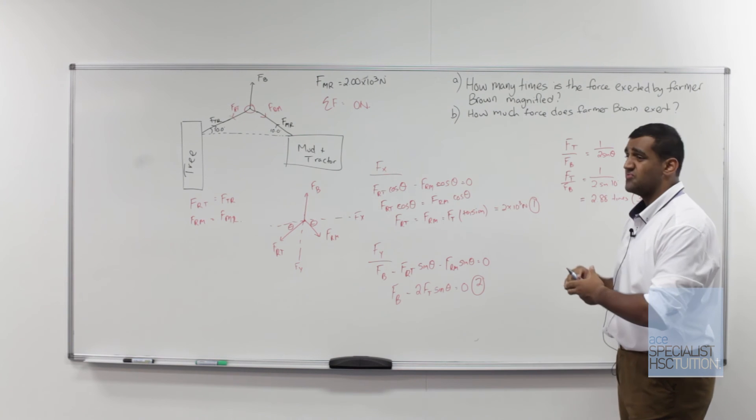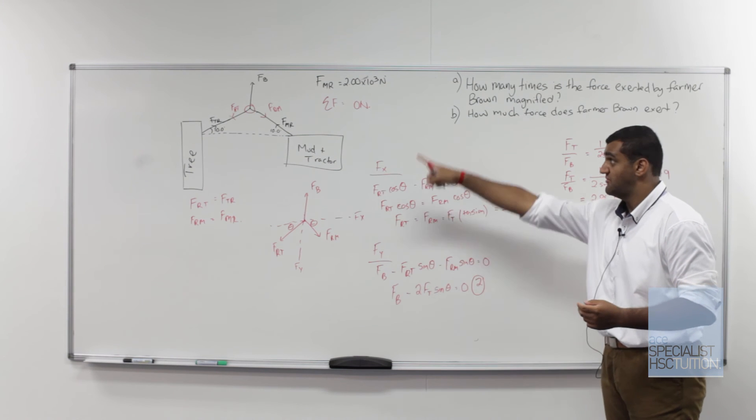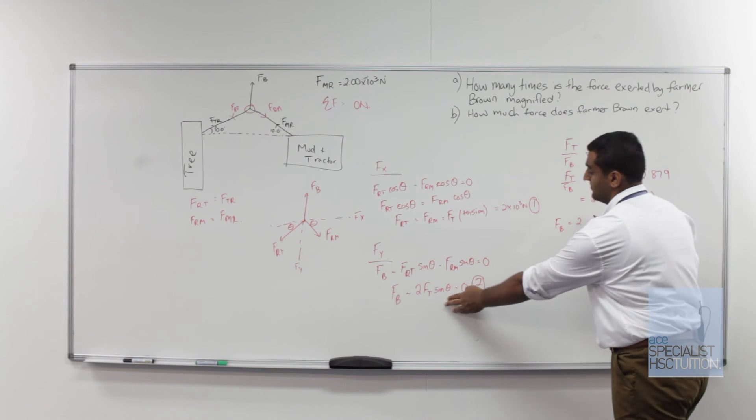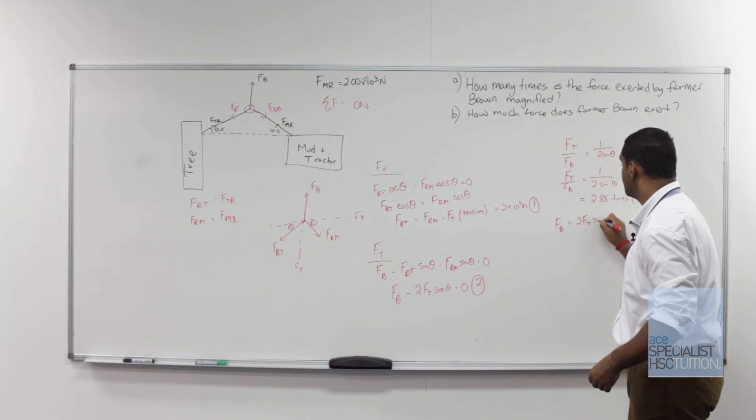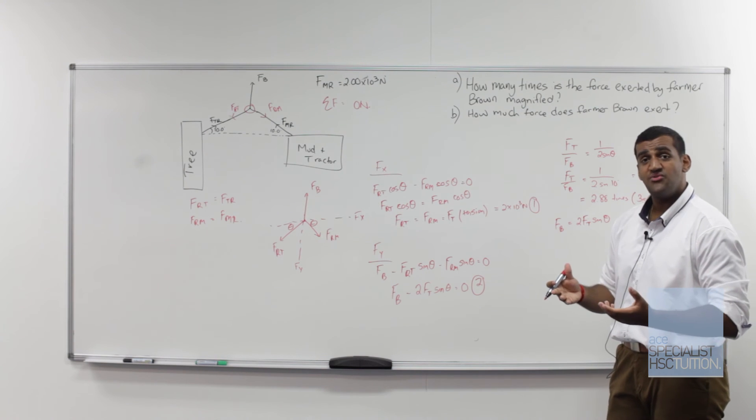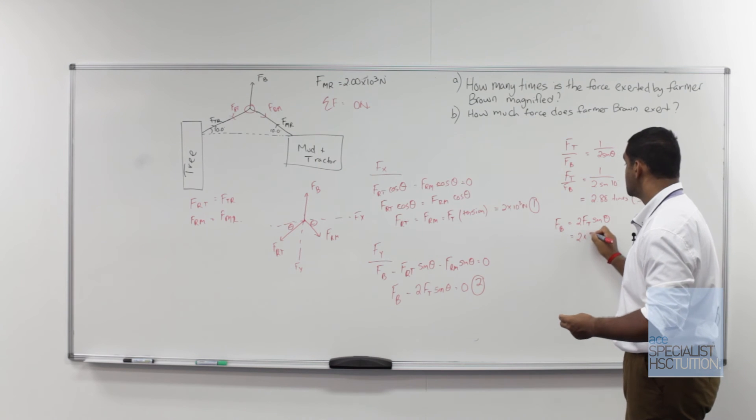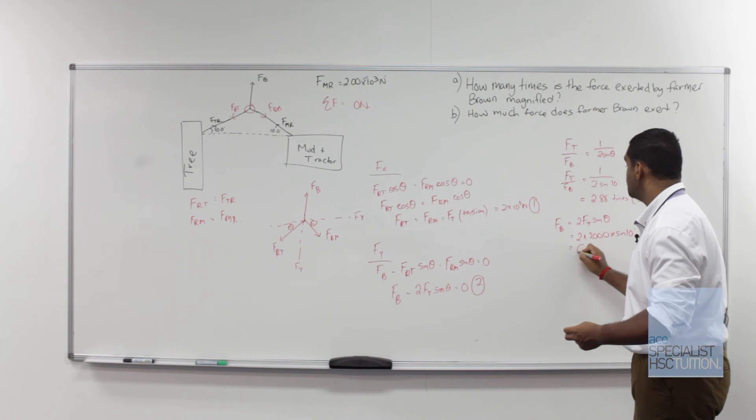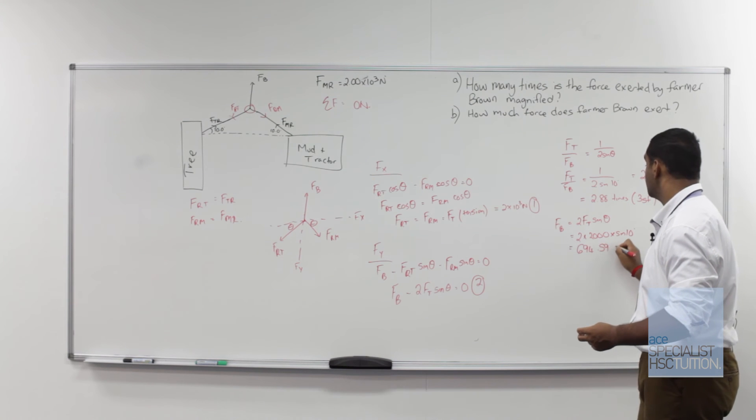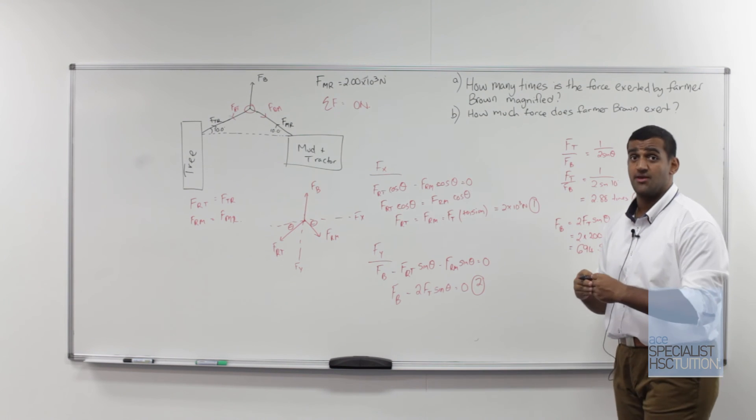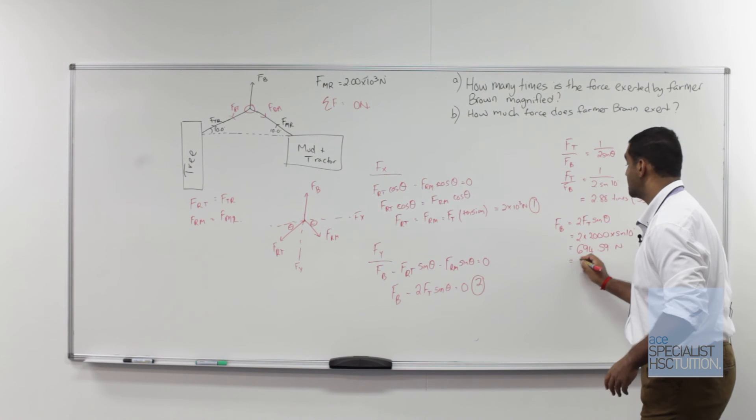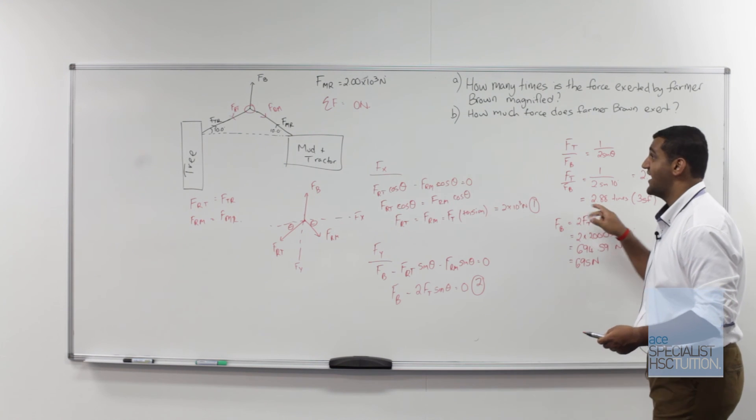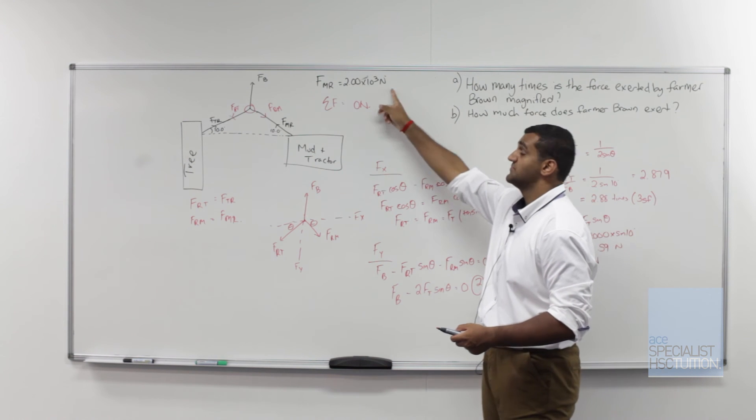Now the second part of the question is how much force does the farmer actually exert, and that is here FB, the force exerted by Farmer Brown. So now if we just sub in our numbers, we know that FB from our second equation here is equal to 2FT sin theta. So now if we sub in our numbers, we get this is equal to 2 times 2000, what we know from here, times sin 10. That gives you 694.59 units. Again we've got to round this to the appropriate number of sig figs which is 3. So that gives us 695. If you always want to check, 695 multiplied by 2.88 should give you your value here which is 2000 units.